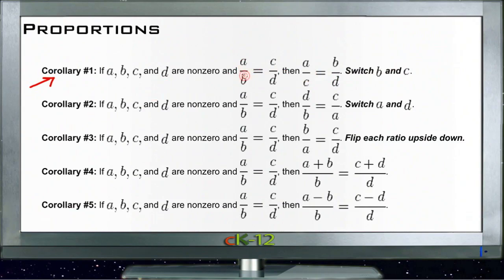It says that if A over B is equal to C over D, then A over C is equal to B over D.